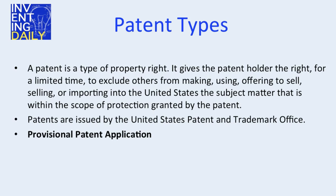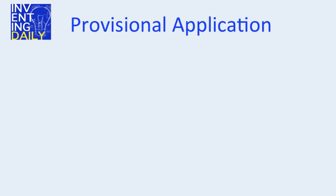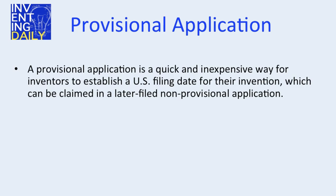We have a provisional patent application, utility patent, and a design patent. A provisional application is not necessary, but if you'd like to be the first to file and save your spot in line, this is the best first step. A provisional application is a quick and inexpensive way for inventors to establish a filing date for their invention, which can be claimed in a later filed non-provisional application.